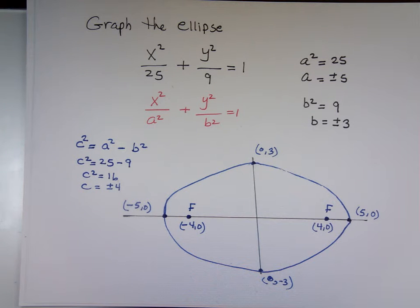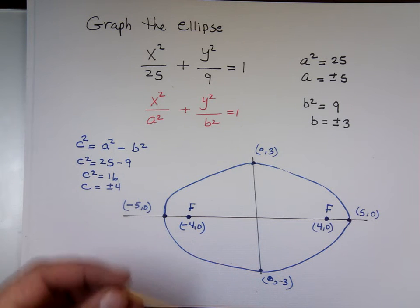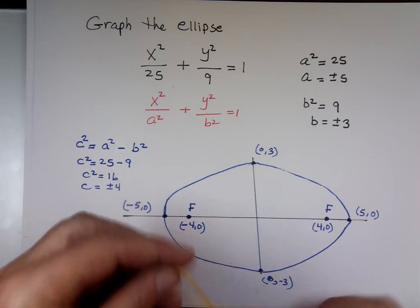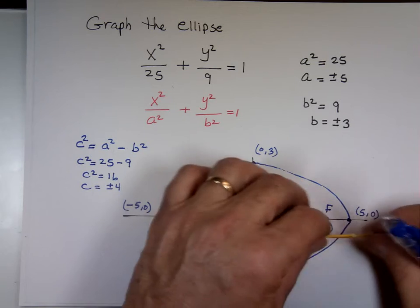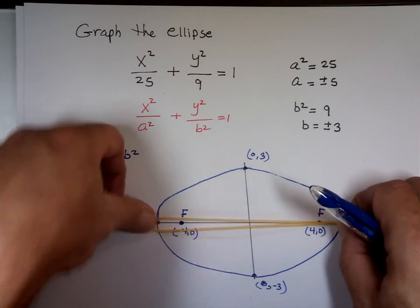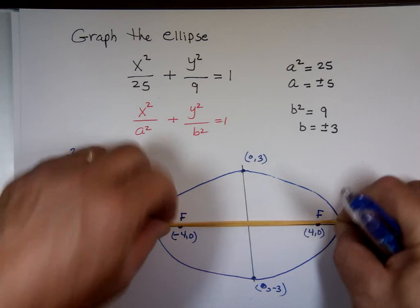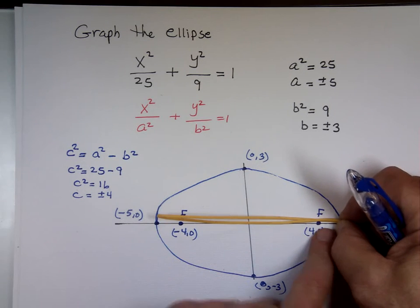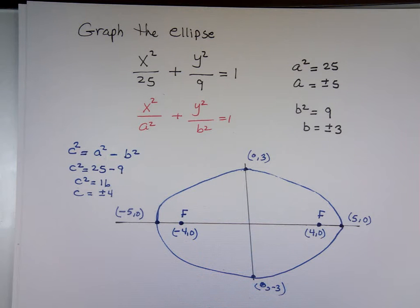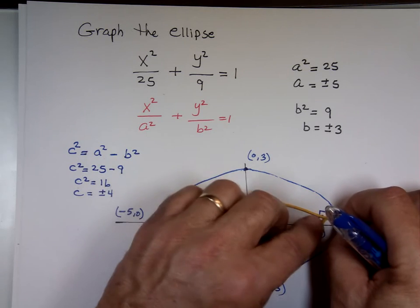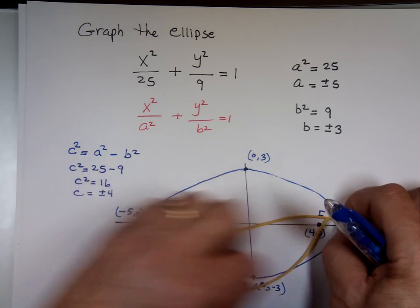If you wanted to physically graph this with a string, how long would it need to be? At least 10 — actually more, about 20 — because you need a loop. When you pull it straight out to the end, it should be end to end: 10 units from here to there and 10 back. So put one tape at 4 units to the right, one at 4 units to the left, and trace the ellipse.